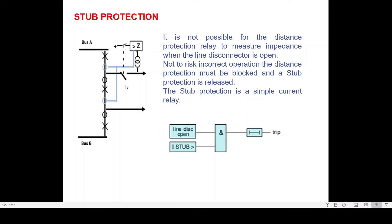The extra protection is a simple current relay. The extra protection used when the 89L is open is a simple time-delayed overcurrent protection relay. The logic is straightforward: when the line disconnector is open and I greater than the threshold — both conditions satisfied through an AND gate — after a settable time delay of, say, 50 or 100 milliseconds, the relay will issue a trip command.